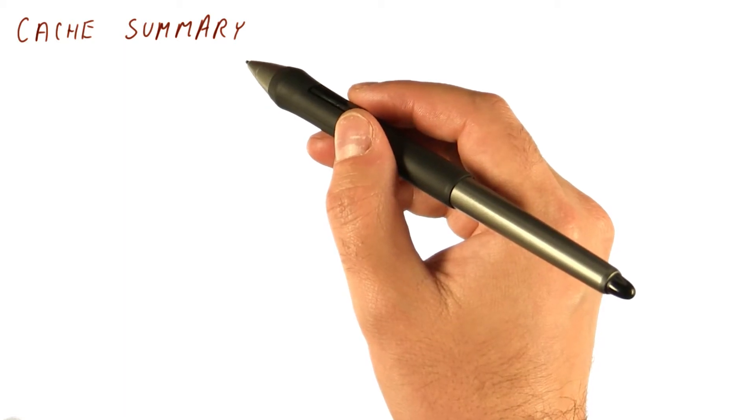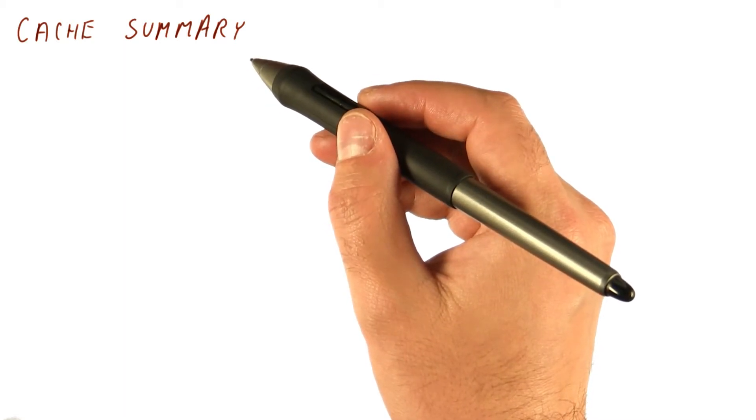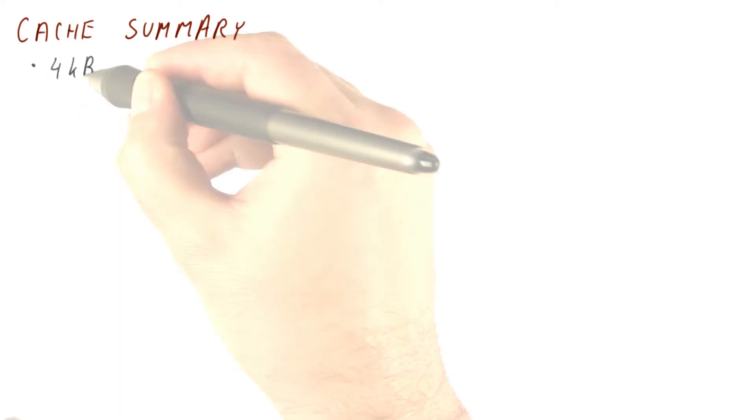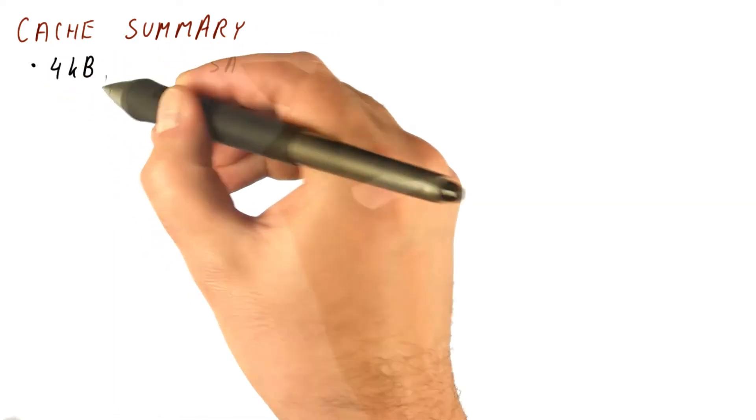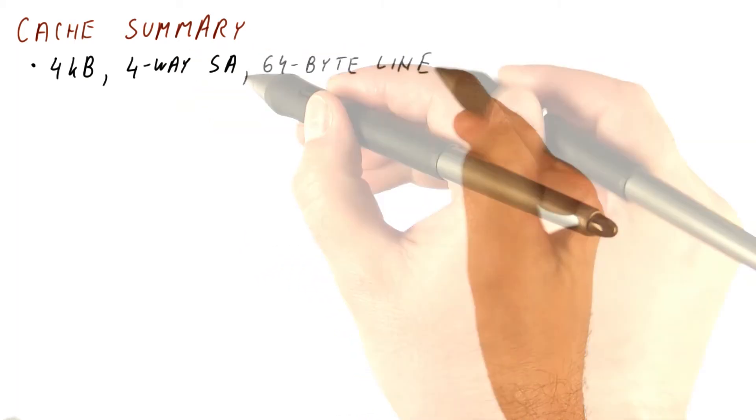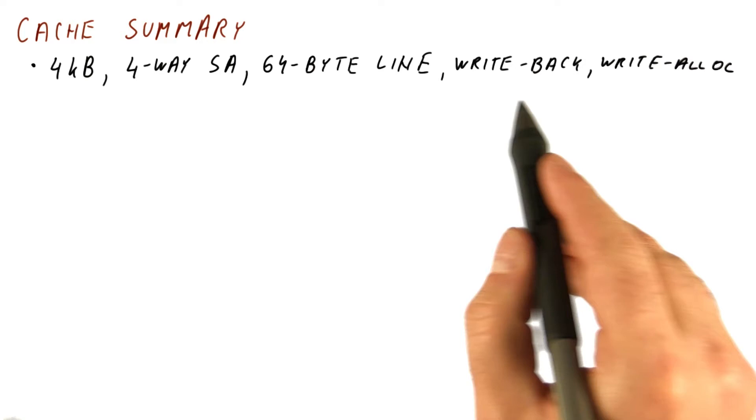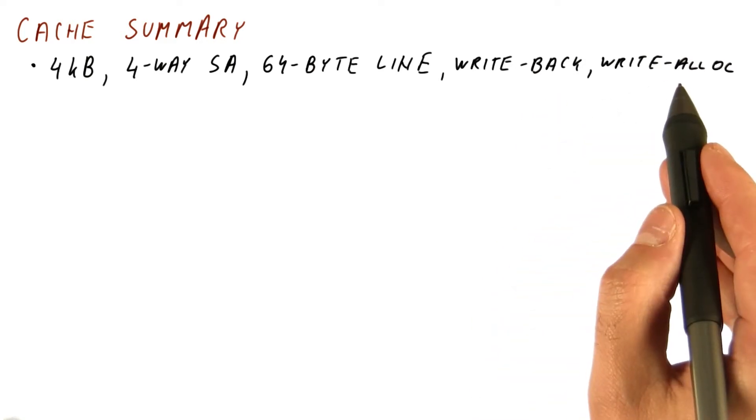Now that we have seen multiple aspects of how caches work, let's summarize them for a more realistic cache. Let's say we have a four kilobyte four-way set associative cache with a 64 byte line size with write back and write allocate write policies.